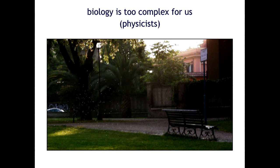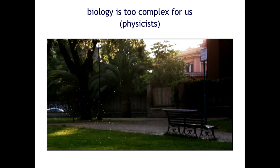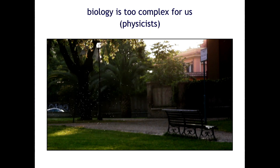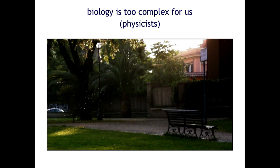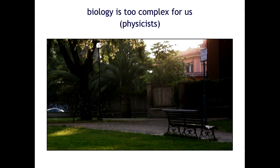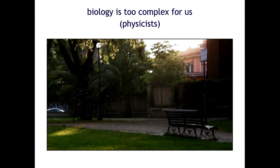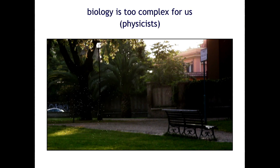I'm part of an institute called the Institute for Complex Systems. But what we actually do is try to brutally simplify complex systems. Sometimes when we simplify systems, in particular biological systems, we just abuse them — we do something bad. In other occasions, more rarely, we do things which actually simplify the system and also make us understand new things. This is the best case scenario. Almost never happens.